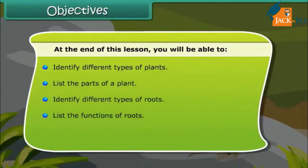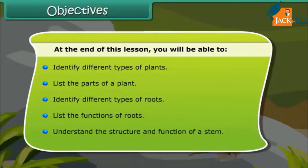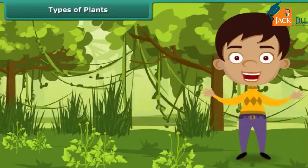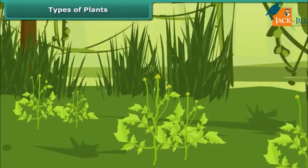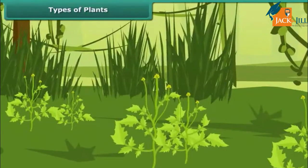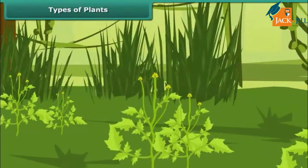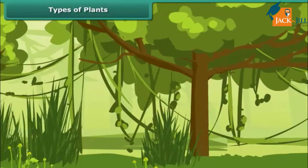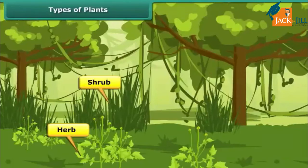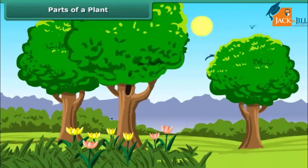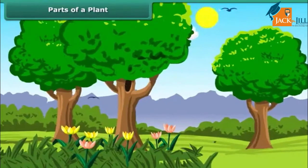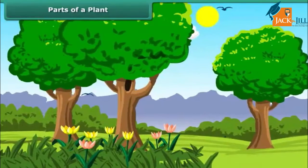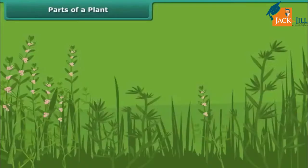We will also list the functions of roots and understand the structure and function of a stem. We see different kinds of plants growing around us; they vary in their appearance. Some are short while some others are tall; some are tender whereas some others are hard. Plants can be classified into three categories: herbs, shrubs, or trees, based on their characteristics. Plants are living organisms that make life possible on earth, providing fruits, vegetables, flowers, wood, and medicines.